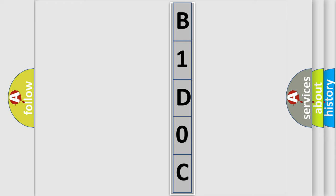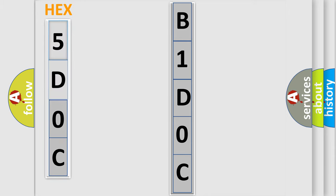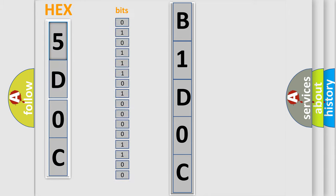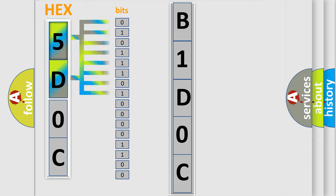The error code is split into two bytes consisting of 16 bits. One bit is the basic unit that each computer works with. The bit has two logical states: zero (low level) and one (high level). By combining the first two bits, the basic character of the error code is expressed.